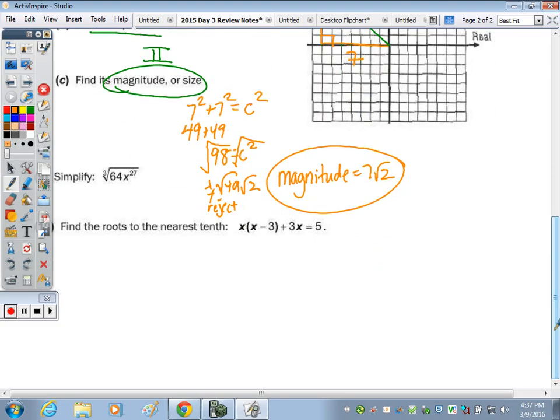Cube root of 64x to the 27th is 4x to the 9th, dividing 27 by 3.